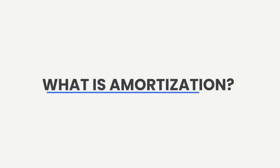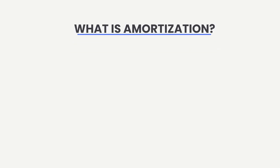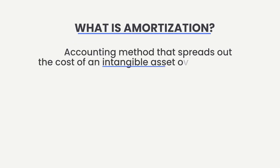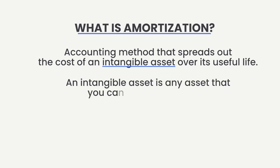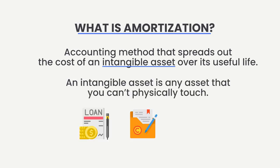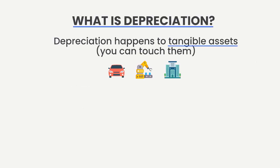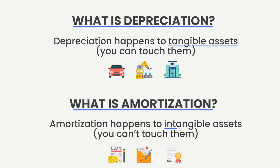As for amortization, this is a very similar concept to depreciation. It's an accounting method that spreads out the cost of an intangible asset over its useful life. An intangible asset is simply any asset that you can't physically touch, such as a loan, a copyright, or a patent. Intangible assets also lose value over time, and accountants write them off by amortizing them. So as a reminder: depreciation happens to things you can touch; amortization happens to things you can't touch.